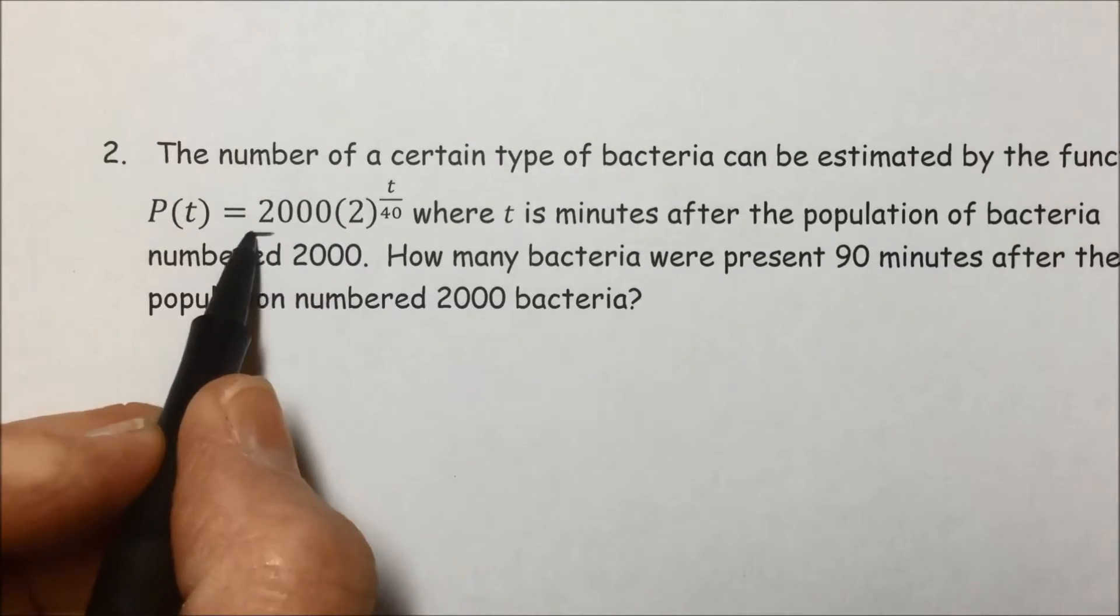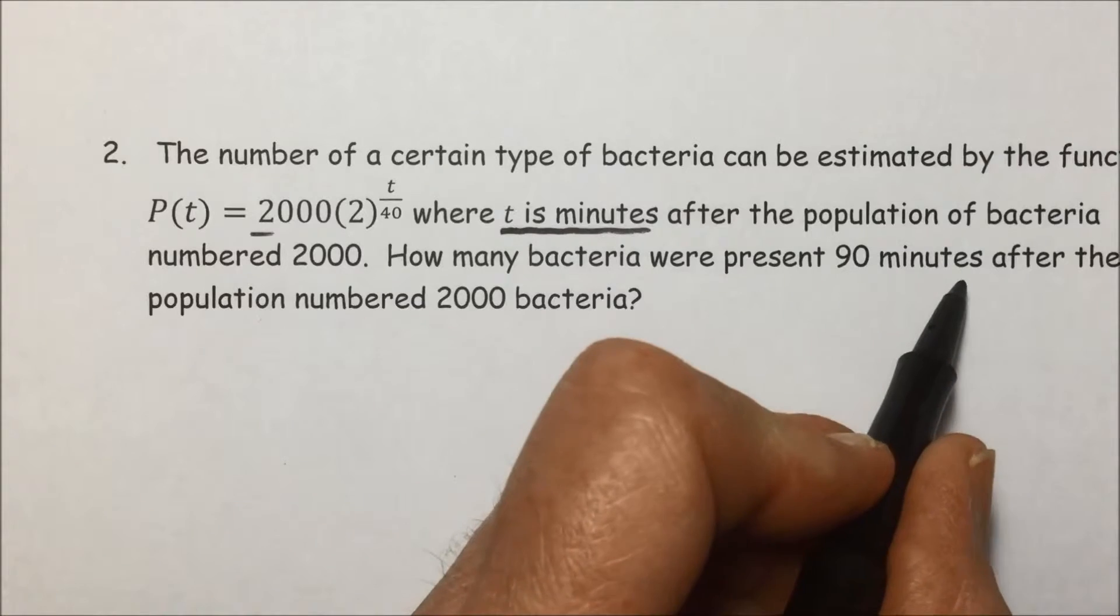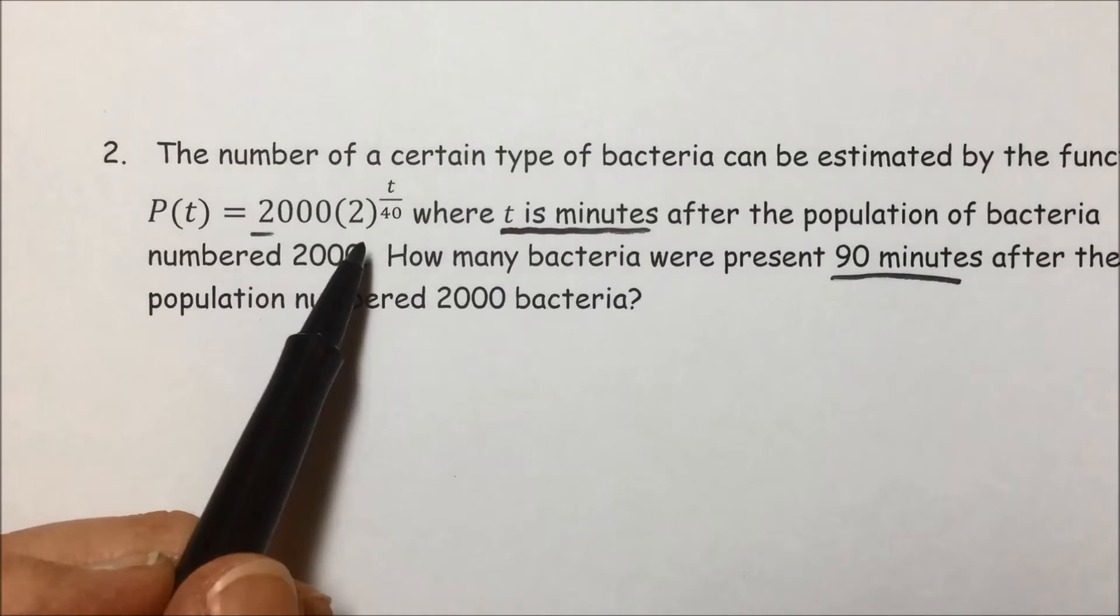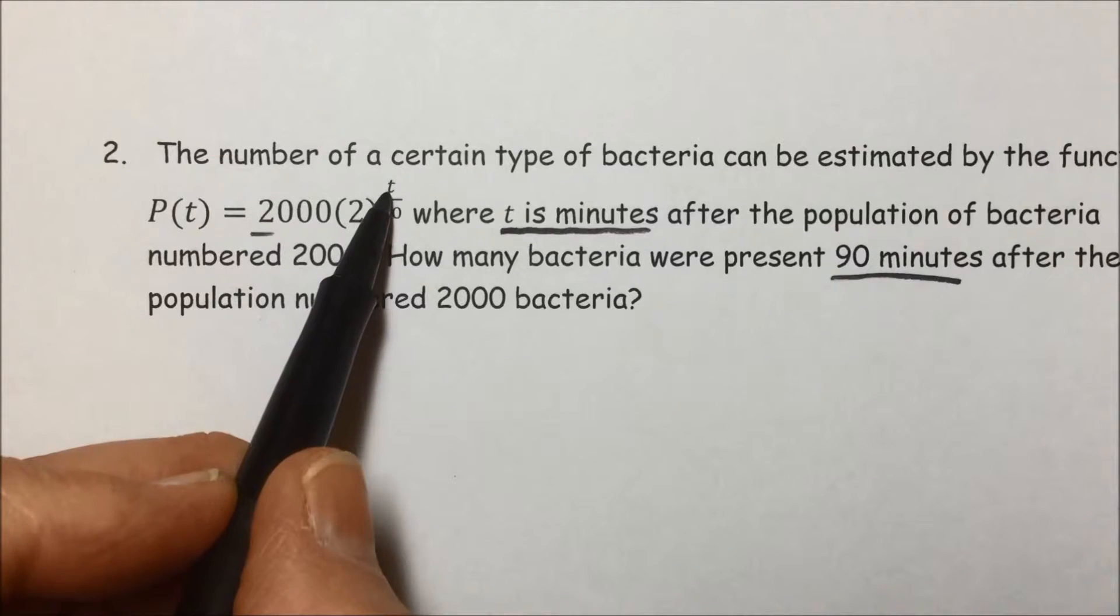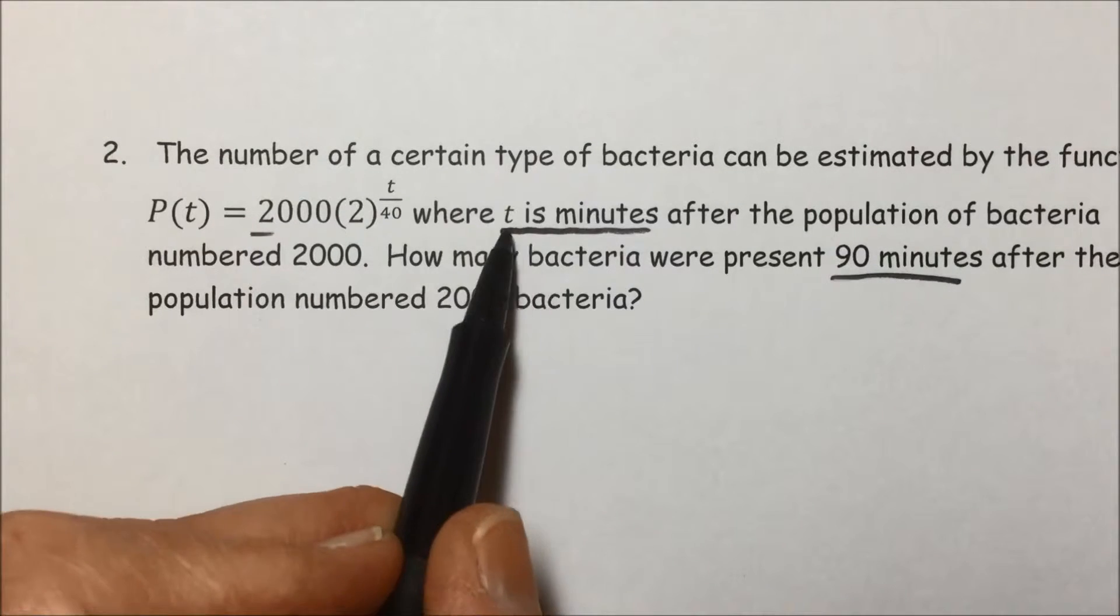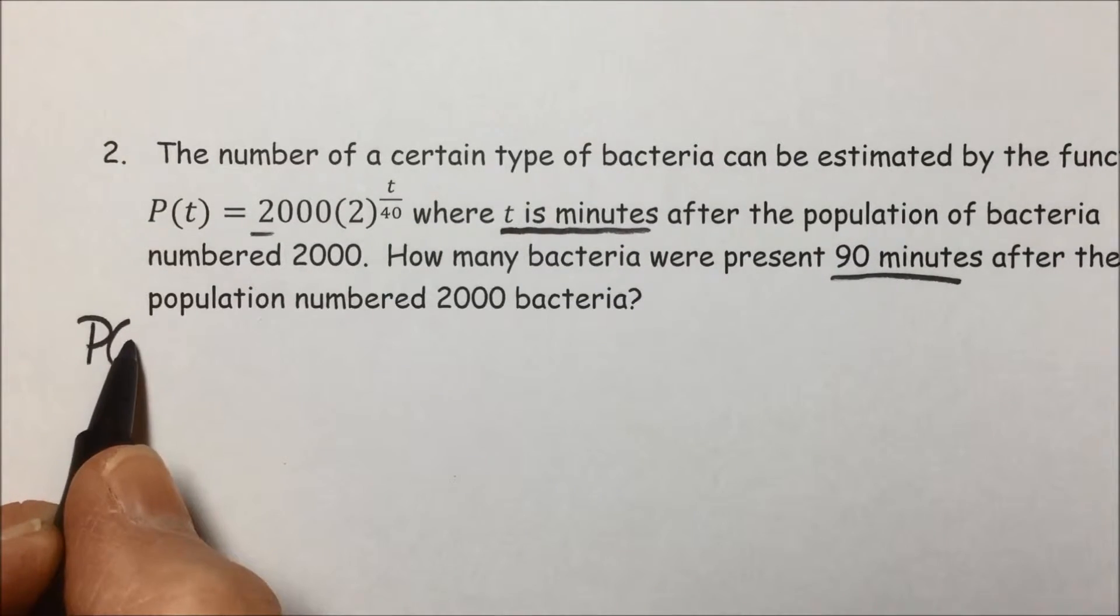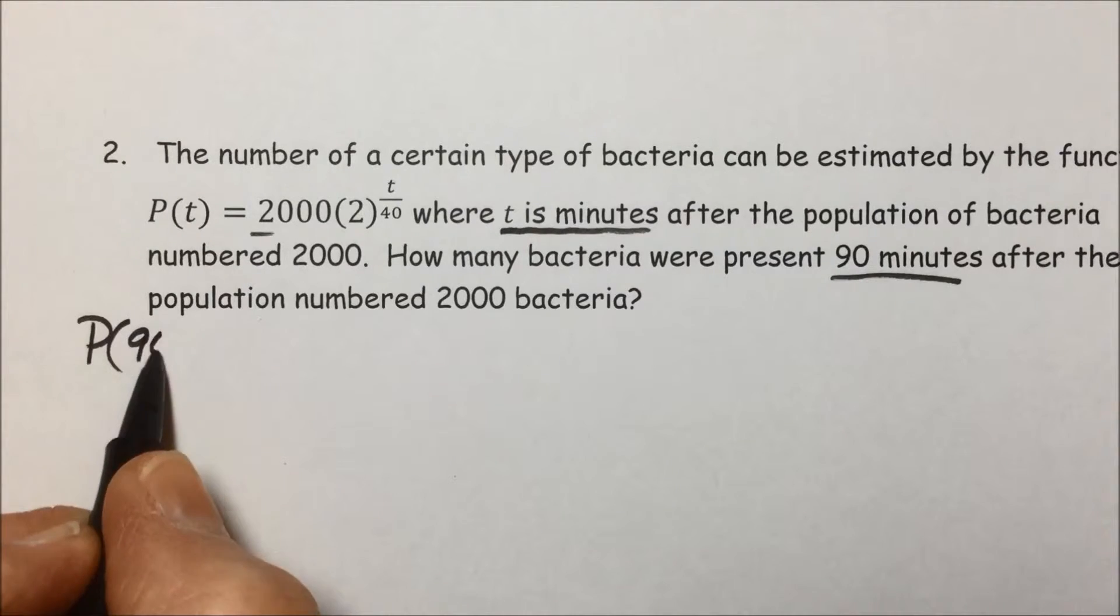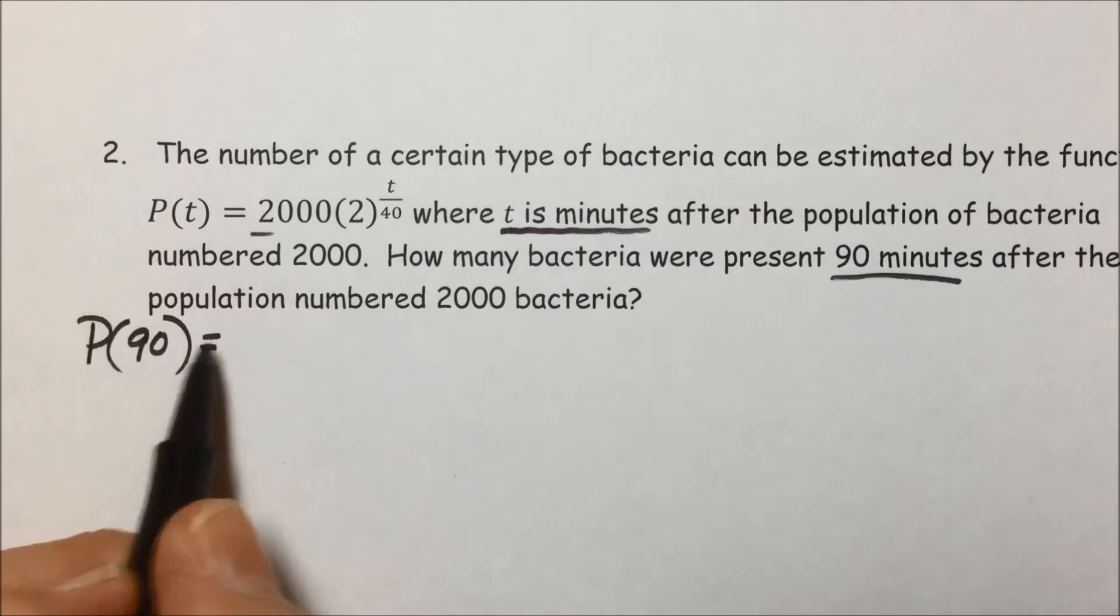Here's that initial 2,000. Of importance is to make sure that your units agree. It's telling us that this exponential function, notice the base raised to an exponential power, T is in minutes, and they're giving us our time in minutes. So to find that population that started out at 2,000, but evaluating it after 90 minutes, we'll replace T with 90.